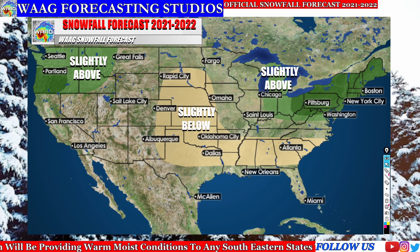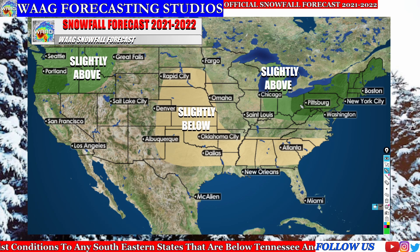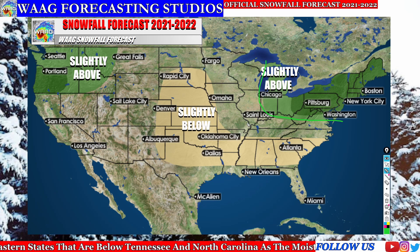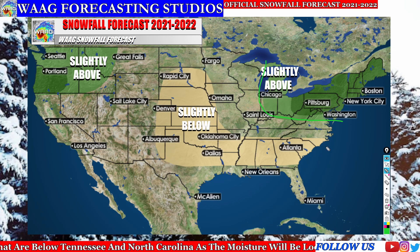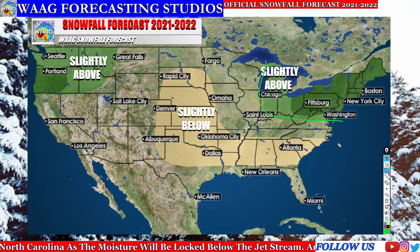On our next slide we're going to be taking a look at the slightly above average region. We have two slightly above average regions, and the first one is up here in the northeastern United States. This stretches all the way from Michigan down to northern Virginia, and it's going to be caused by that jet stream again. You guys up here in the northeast United States as well as the Ohio Valley are going to be getting frequent jet stream patterns, which is going to be shoving those low pressure systems right over top of you.